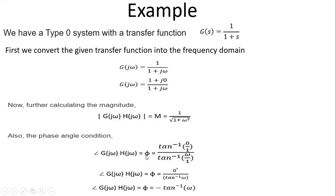The phase angle condition is φ = tan⁻¹(0/1) − tan⁻¹(ω/1), which simplifies to φ = −tan⁻¹(ω). So the angle of G(jω)·H(jω) is −tan⁻¹(ω). We now have: magnitude M = 1/√(1+ω²) and phase angle φ = −tan⁻¹(ω). For these two expressions, we draw a polar plot by substituting different values of omega.